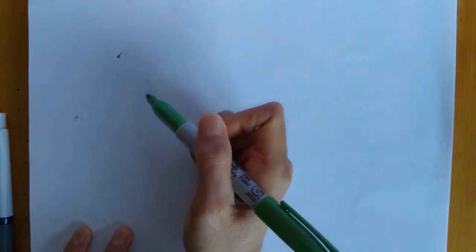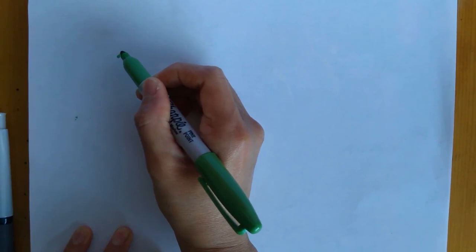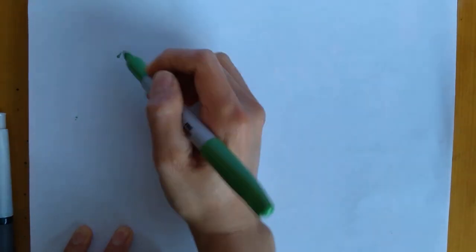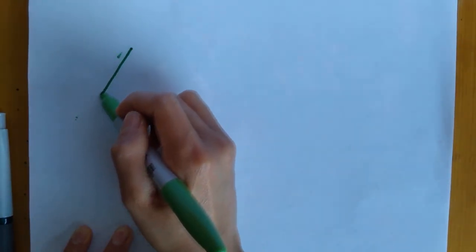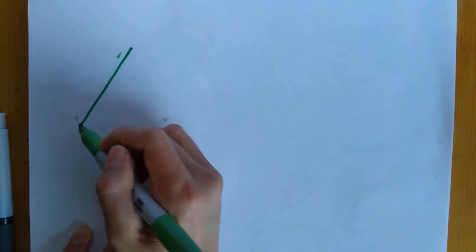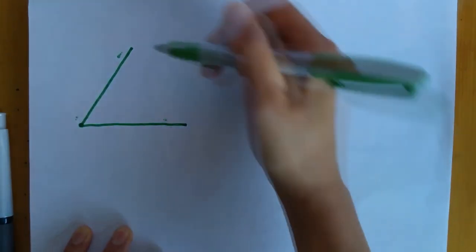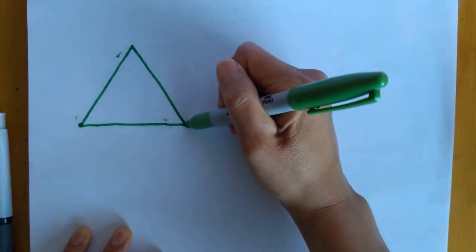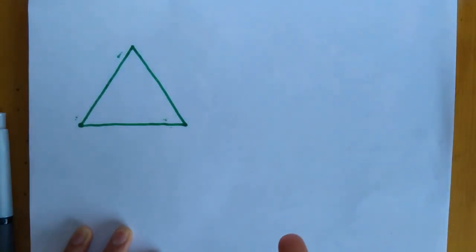In order to draw a triangle, you need to draw three lines connected. Here we go. Hope it works out. One, two, three. Triangle.